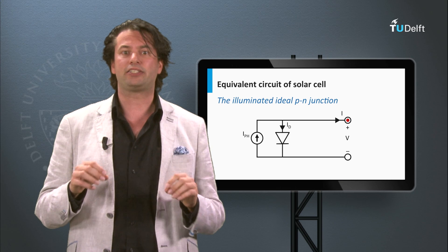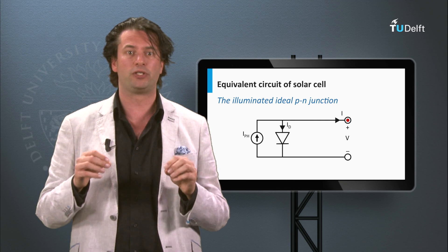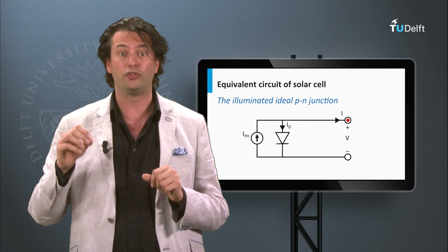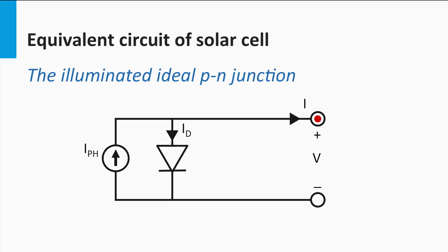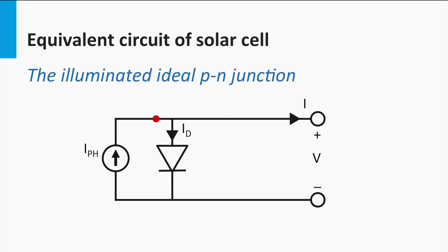Now we will illuminate the P-N junction using light, generating a large current dominated by the drift of minority charge carriers, which is opposite to the forward direction of the P-N diode. This is represented in the equivalent circuit by a current source connected in parallel with the diode. The electrical symbol of a current source is a circle with an arrow pointing in the direction of positive current. The far majority of electrons travel through the current source in the opposite direction of the arrow. The current generated by light is I_pH, where pH stands for photo. Note that the photocurrent is in the opposite direction of the forward current of the diode.